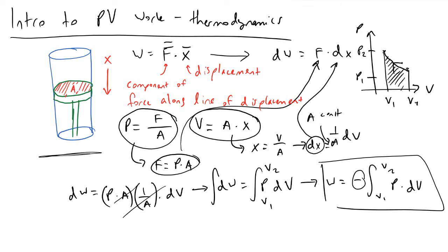The reason we have this negative sign is because depending on which direction we are headed, if V1 is smaller than V2, if we are compressing our system, then this area will be negative because we are moving to the left.